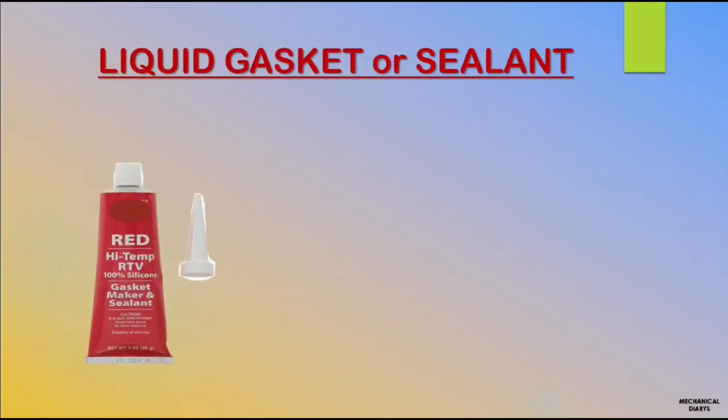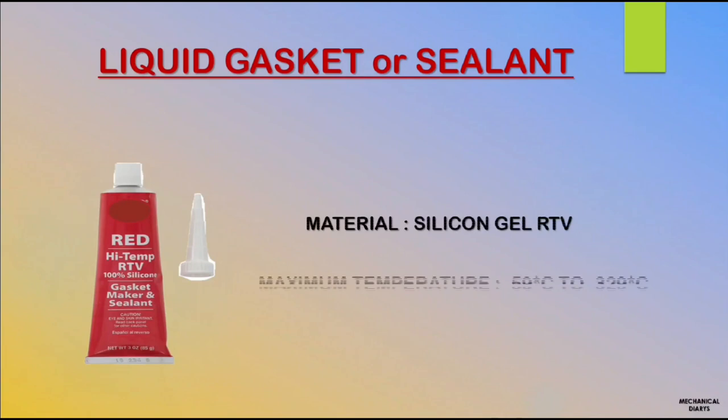The last gasket is liquid gasket or sealant. In refinery, this sealant is mostly applied with asbestos gasket for more sealing. Material is silicone gel, and maximum temperature range is 59°C up to 329°C. As of now we have finished flange management and gasket management.